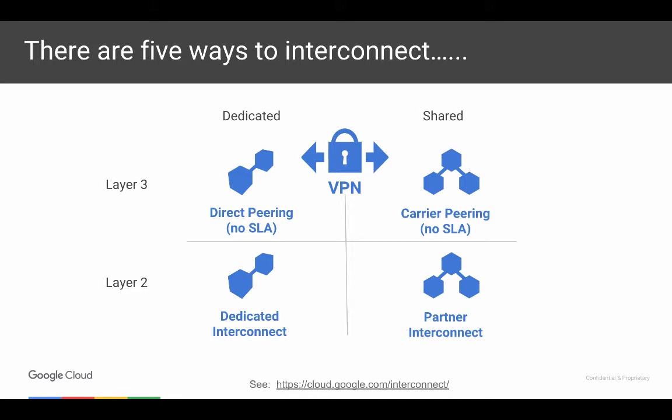Is there any drawback of going directly to Google versus through a partner? Typically what we see with customers is if they want sub-rate bandwidth — everything in the dedicated column, whether Layer 2 or Layer 3, is going to be a full 10 gig port. So if you say you want a gig or 500 megs of bandwidth connectivity, we'd say look at the shared partner services because they subdivide the bandwidth, so you don't have to buy a full 10 gigs. But with Google, everything on our edge is a 10 gig port.